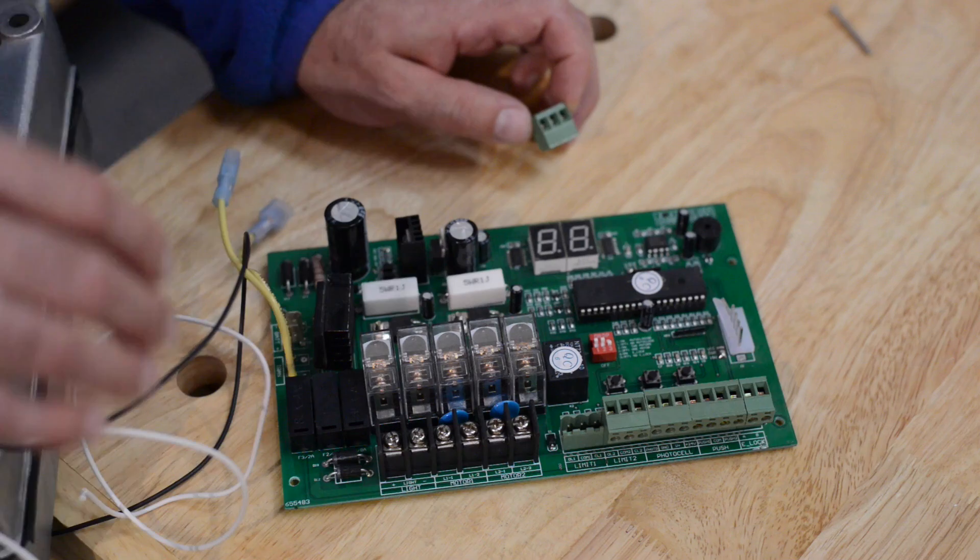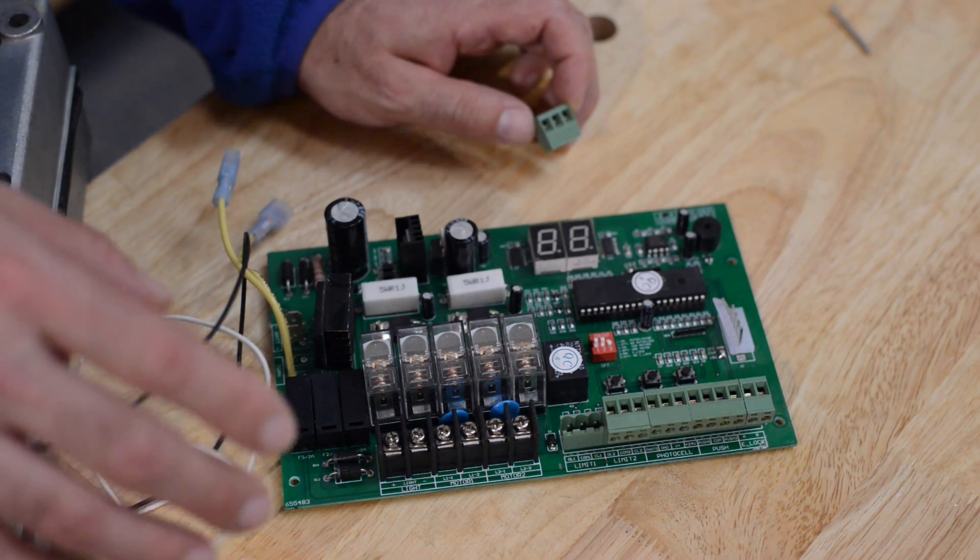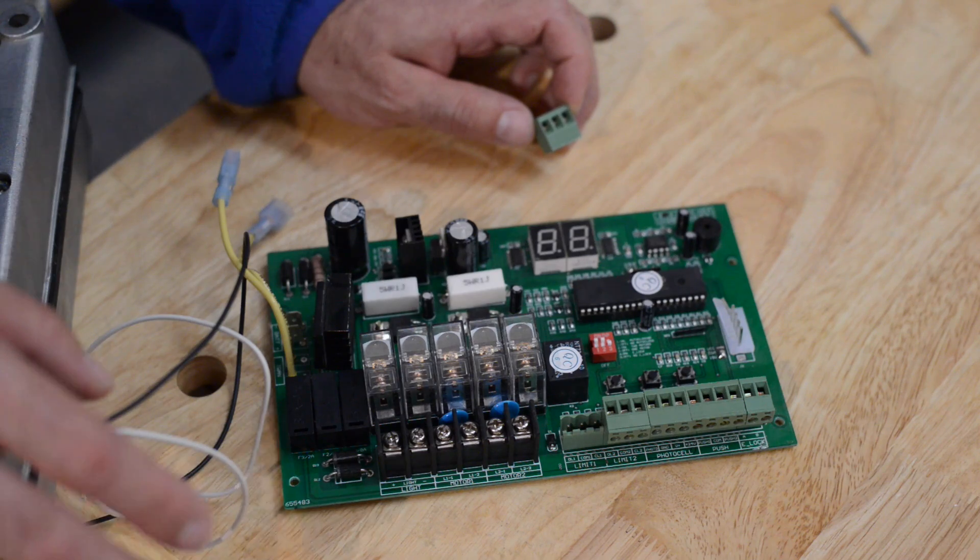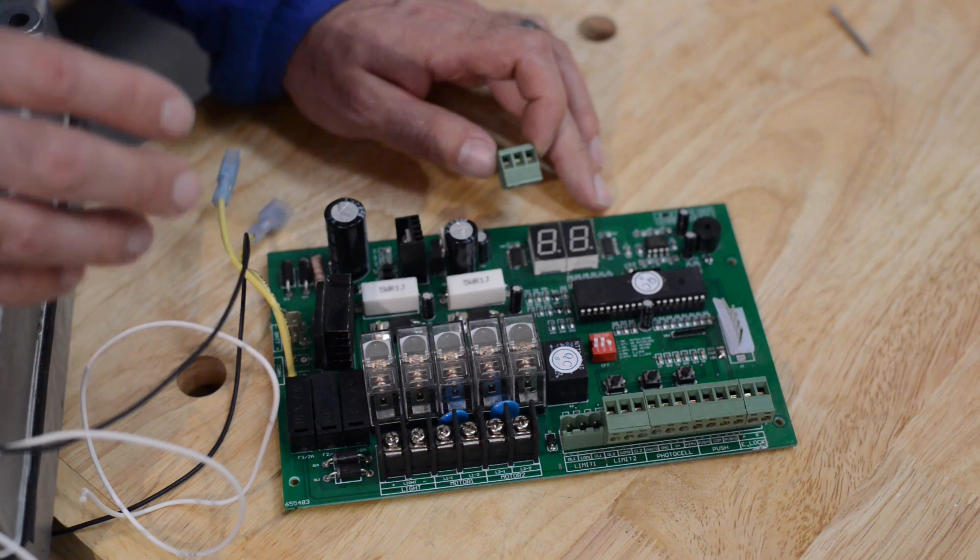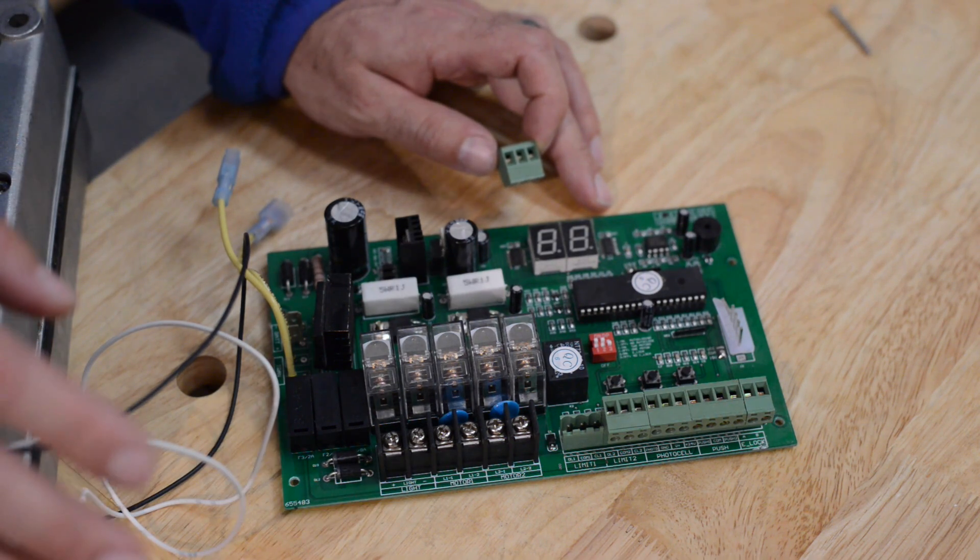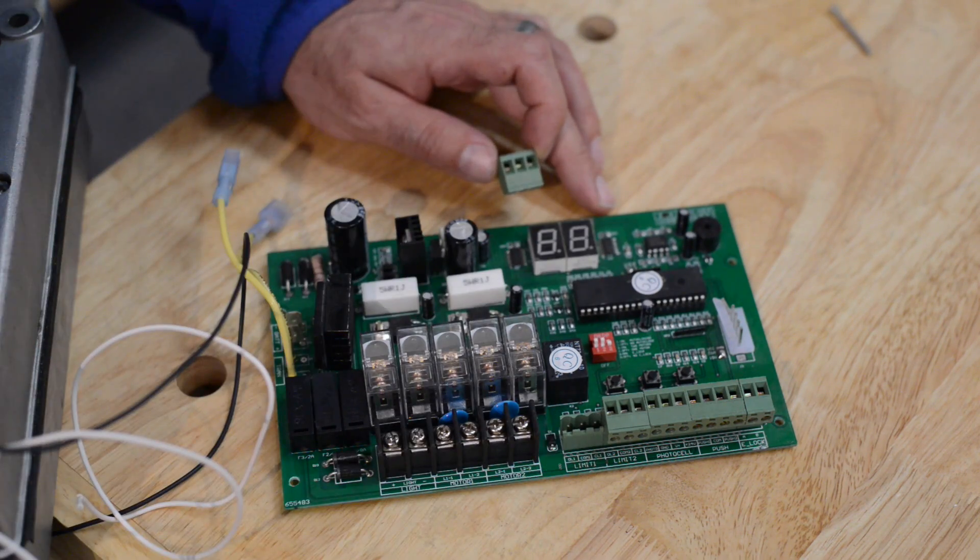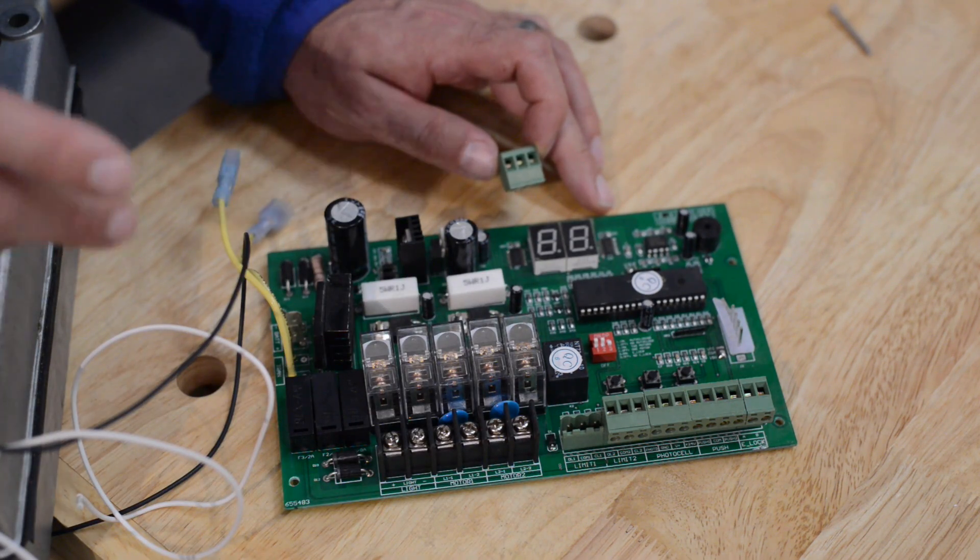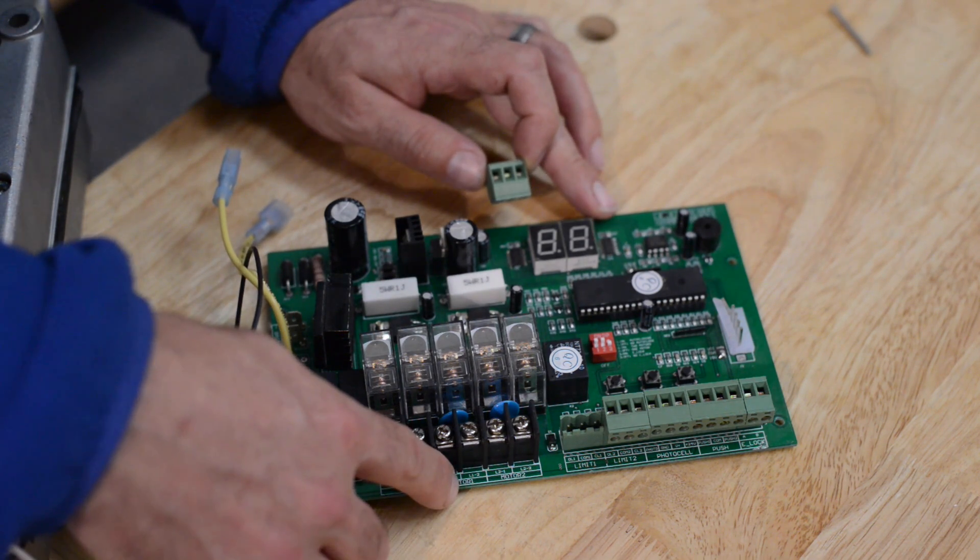Then from your open limit switch which you identified earlier out on the operator arm. You are going to take the wire that leads from the normally closed on the open limit switch and go to OL1. Then from the closed limit switch you are going to take the normally closed wire from the closed limit switch and bring it back to CL1. Then of course the two motor leads from that operator you want to go to motor one.